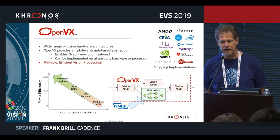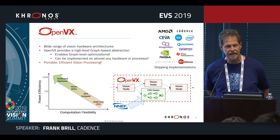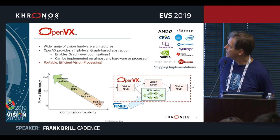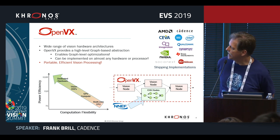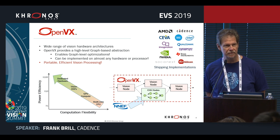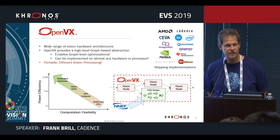What we mean by that is: if you write your OpenVX code using the library, you want to get the same or similar performance as if you wrote non-portable, hand-optimized code for that specific platform. We have largely succeeded in this goal. Shipping implementations exist covering CPUs, GPUs, DSPs, and dedicated hardware — all the kinds of hardware shown in the chart.